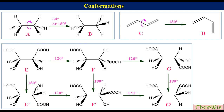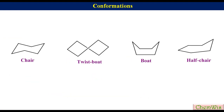These spatial arrangements of atoms or groups of a molecule that can be interconverted by just rotation about the single bonds are called conformations. So A and B are the conformations of ethane, C and D are the conformations of 1,3-butadiene, and E, F, G, E prime, F prime, and G prime are the conformations of tartaric acid. Chair, twist boat, boat, and half-chair forms of cyclohexane are also examples of conformations.